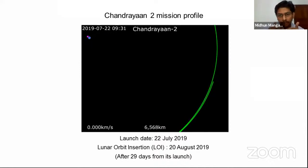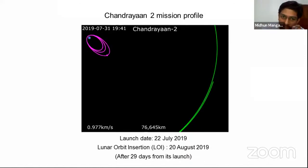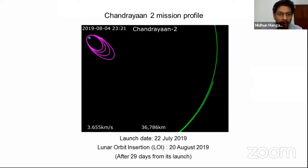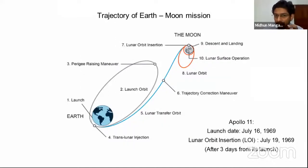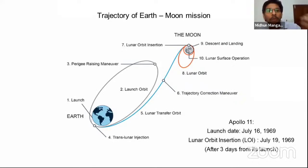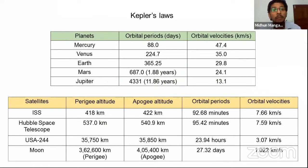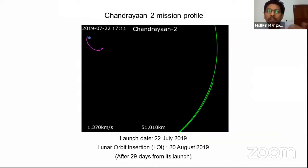In Chandrayaan-2, the spacecraft performed multiple orbit-raising maneuvers — six to seven times — around Earth before being injected into the lunar transfer orbit. Each maneuver requires firing thrusters and increasing velocity, which in astronautical terms is called delta-v (Δv) — the change in velocity needed to move between orbits. This approach is more time-consuming but significantly cheaper. ISRO reports spending approximately 25 lakh rupees to put just one kilogram of mass into orbit.